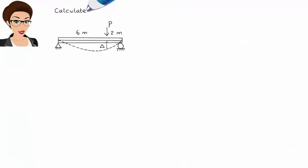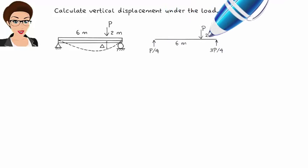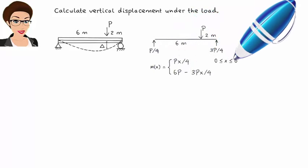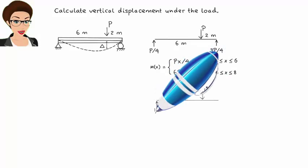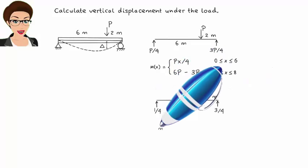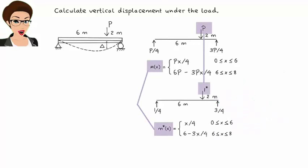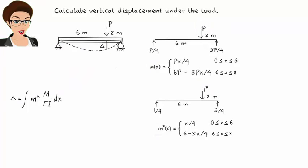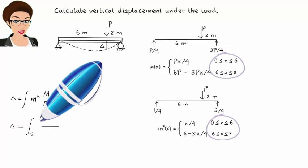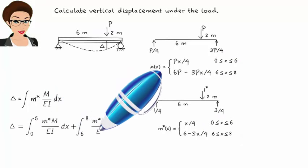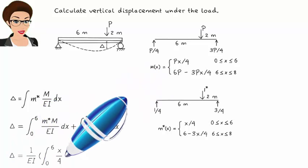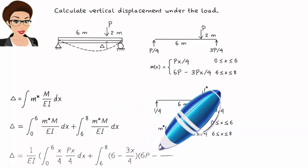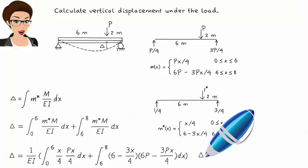Let's go ahead and calculate vertical displacement under load P as well. Here is the moment equation due to P. It is the same equation we used previously. Now replace P with a virtual unit load and write the moment equation due to this unit load. This is going to be the same as the M equation where P is replaced with 1. Therefore, the virtual work equation becomes the integral expression. Here, since the moment equation intervals match, we can write the simplified form. Delta equals the result.